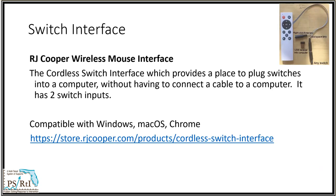RJ Cooper created a wireless mouse with two jacks to emulate the left and right click. With additional software, the ports can be changed to emulate other keystrokes. The device works with Windows, Mac, and Chrome computers. The great feature is no cords, which can make it easier for students to access the computer in positions other than their wheelchair.